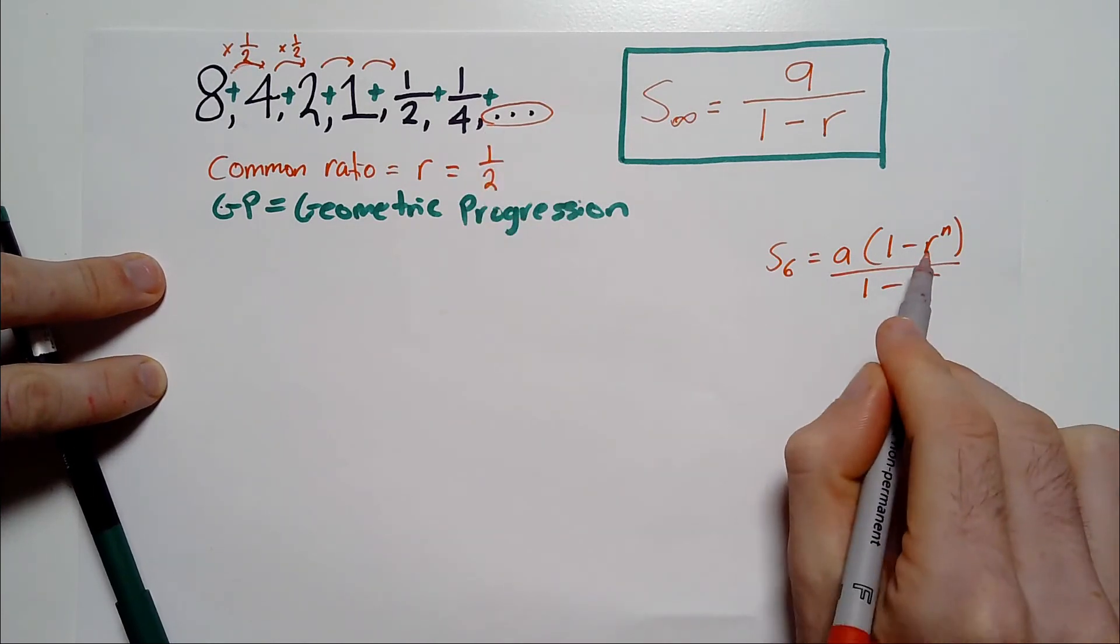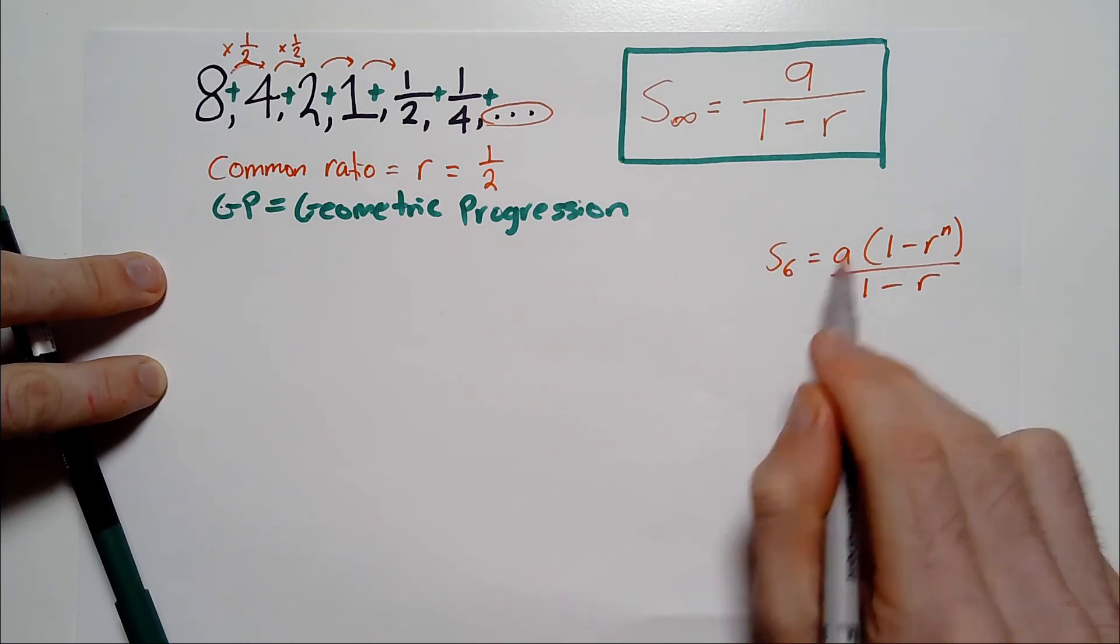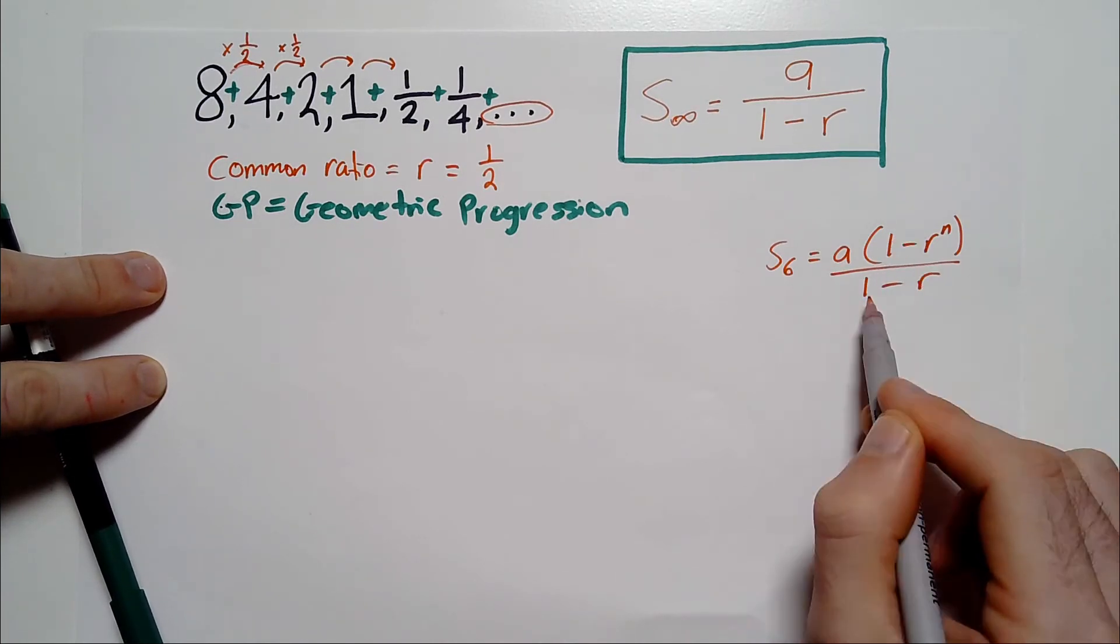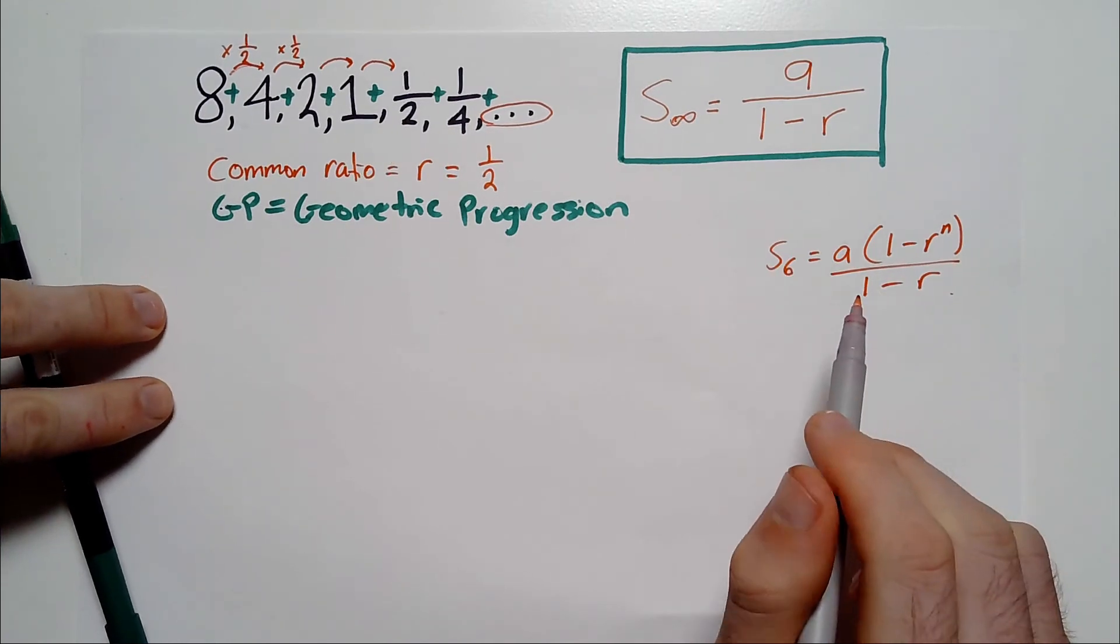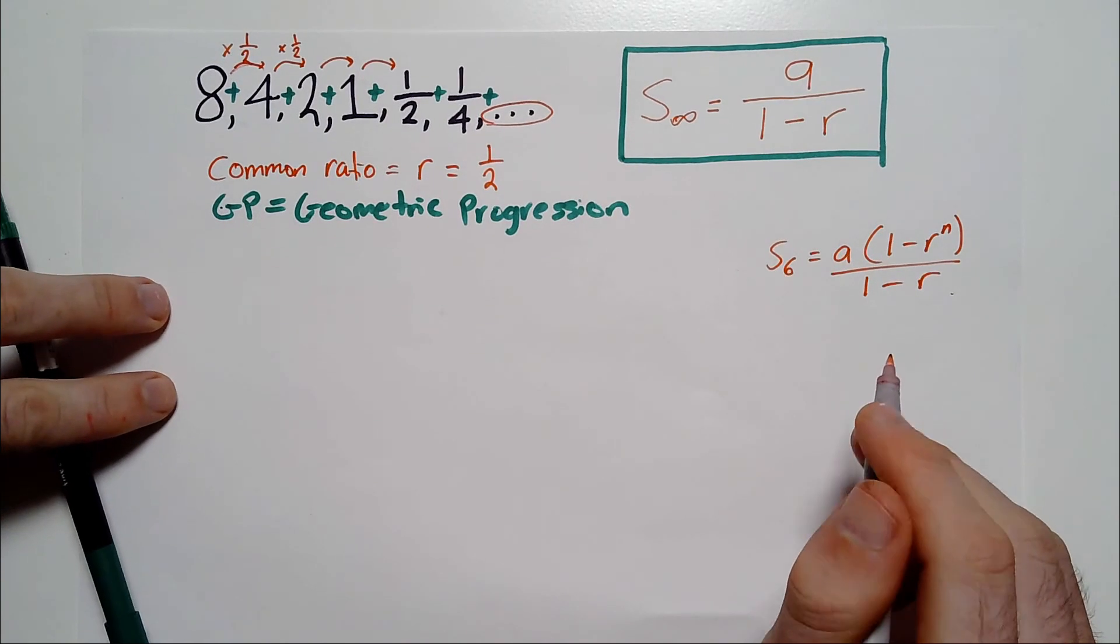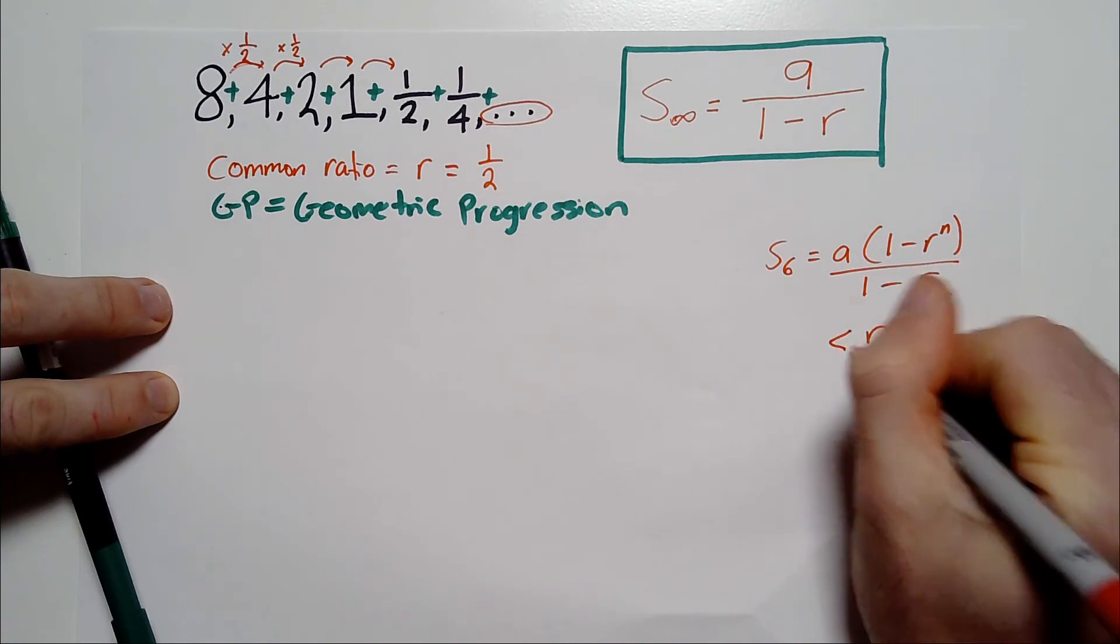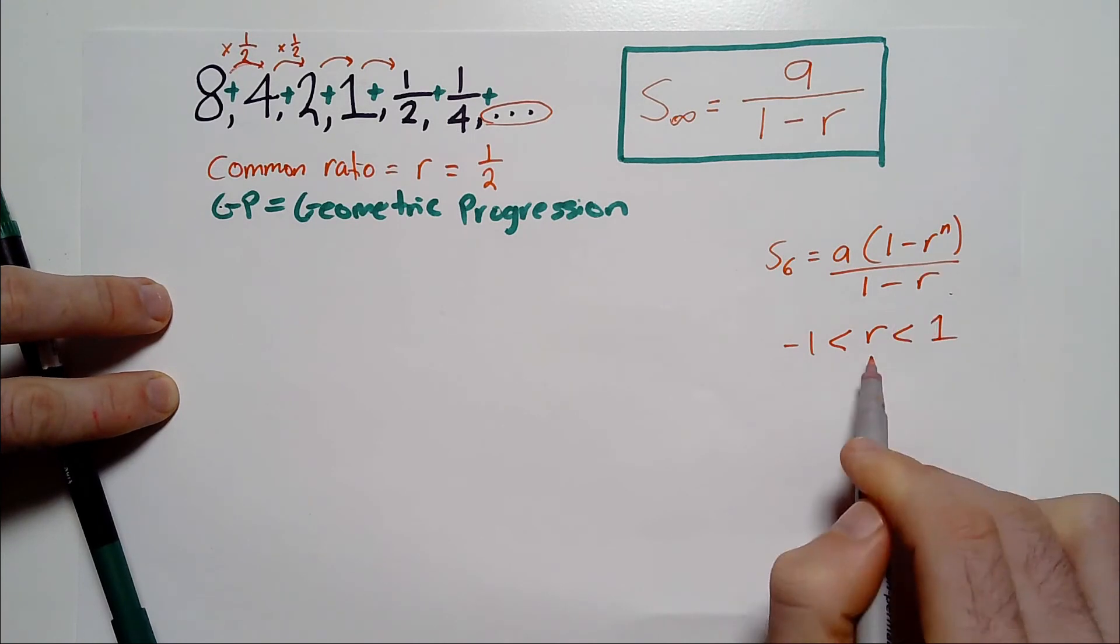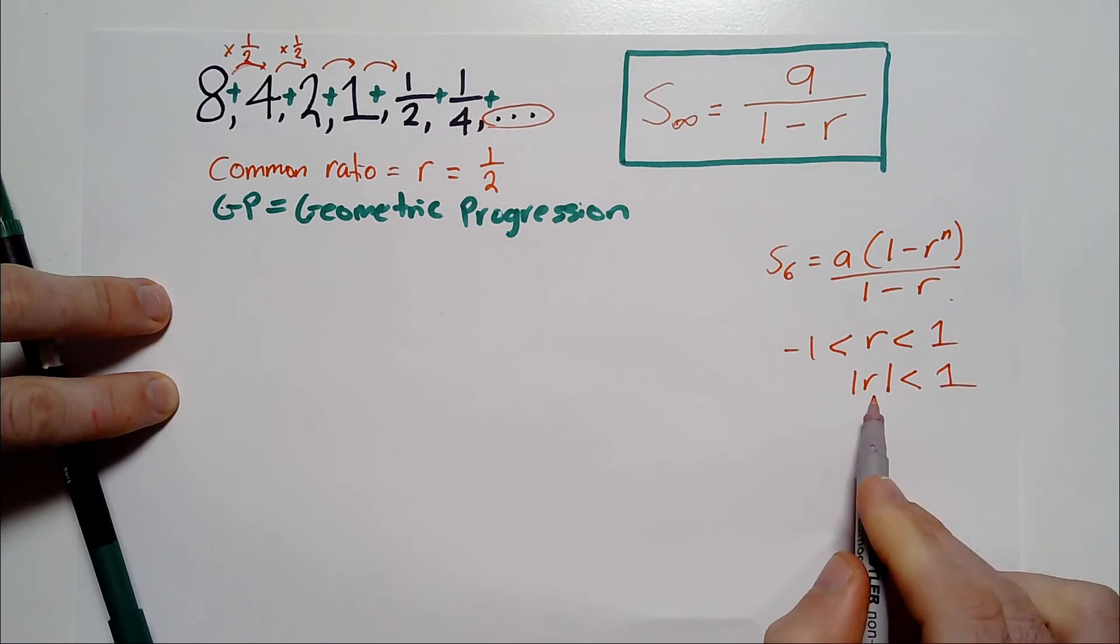Notice also that I've got the R to the N and the R here after the 1. There's a different variation of this formula that you might be familiar with, where it actually goes A bracket R to the N minus 1 over R minus 1. So the 1 and the R's here would be in the opposite order, and that would be the case if the ratio was greater than 1 or less than negative 1. So the reason I've got it in this order is because, in this case, our R sits between negative 1 and 1, which means I apply this version of the formula.